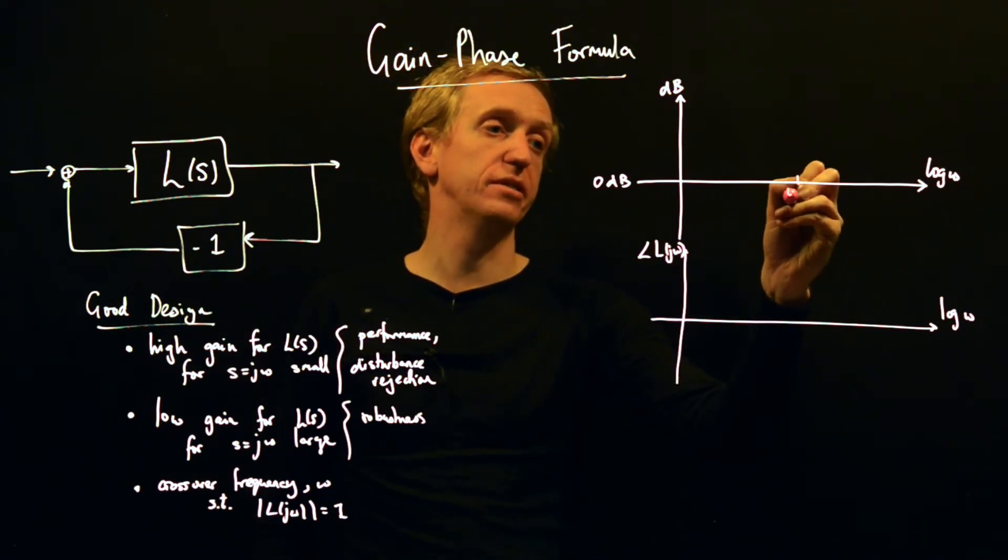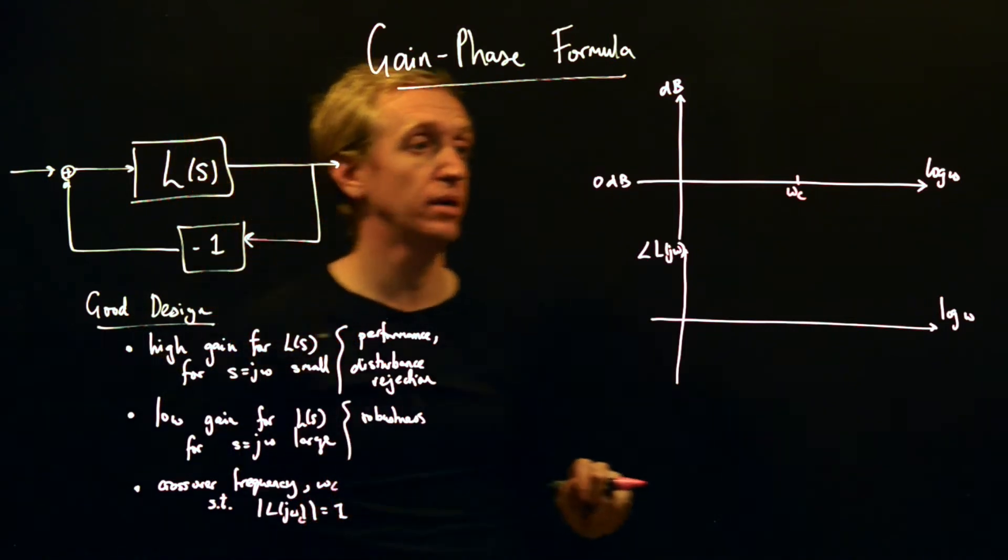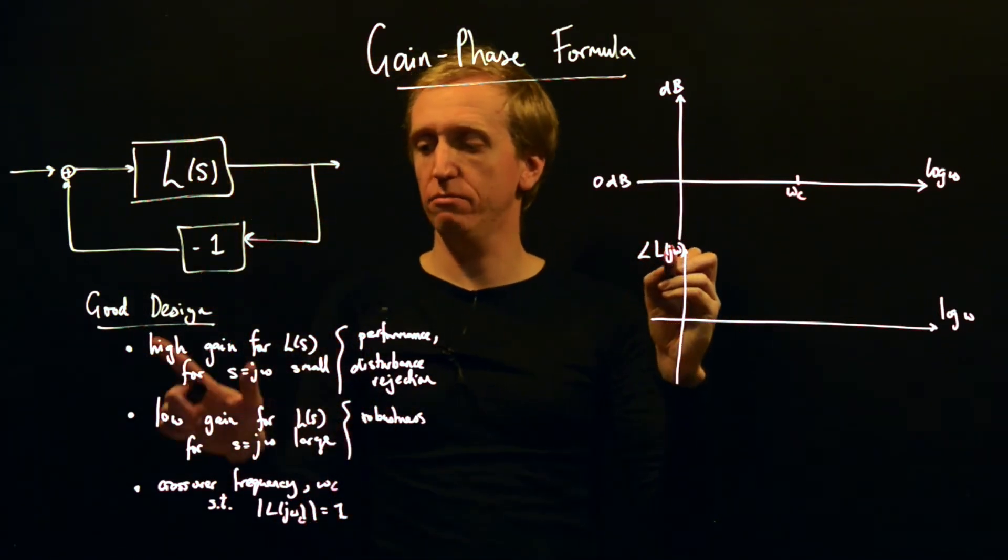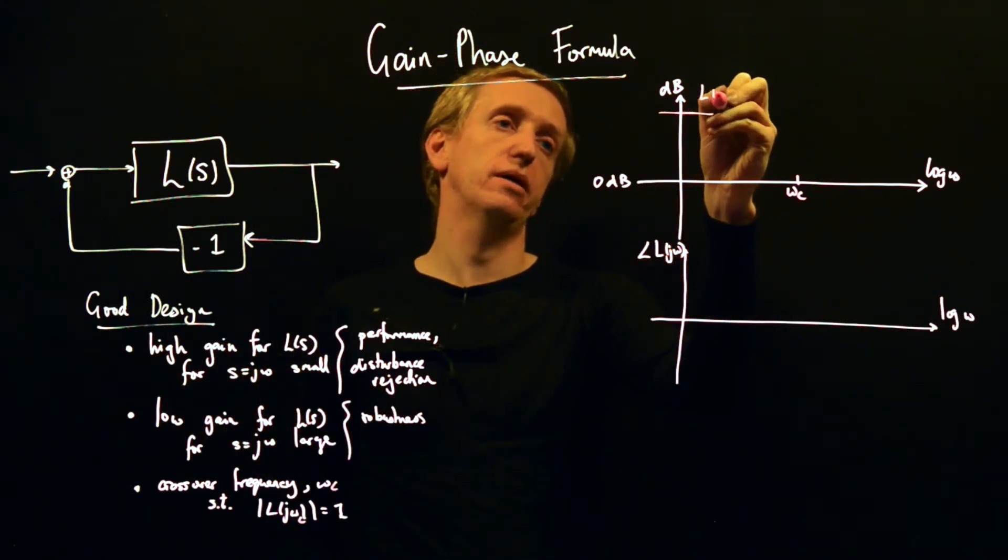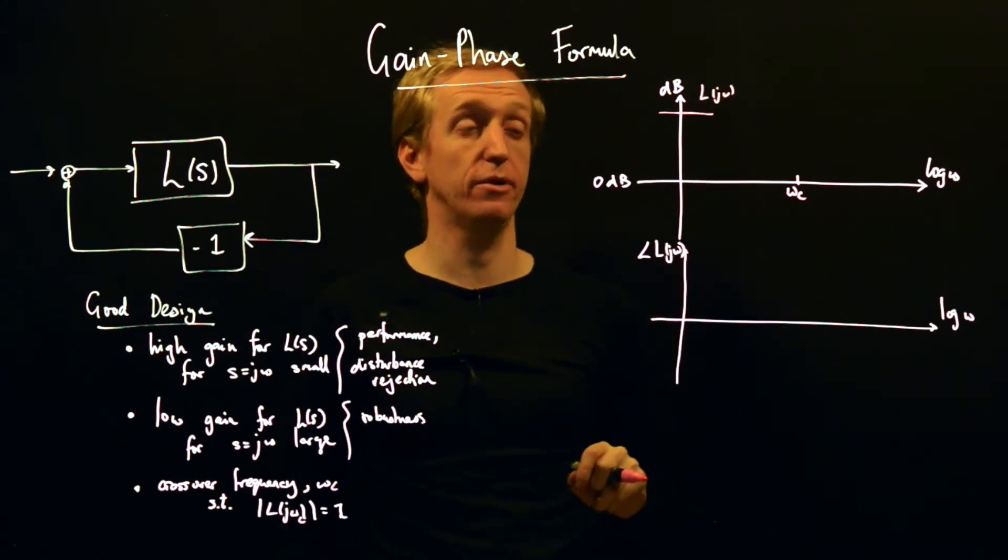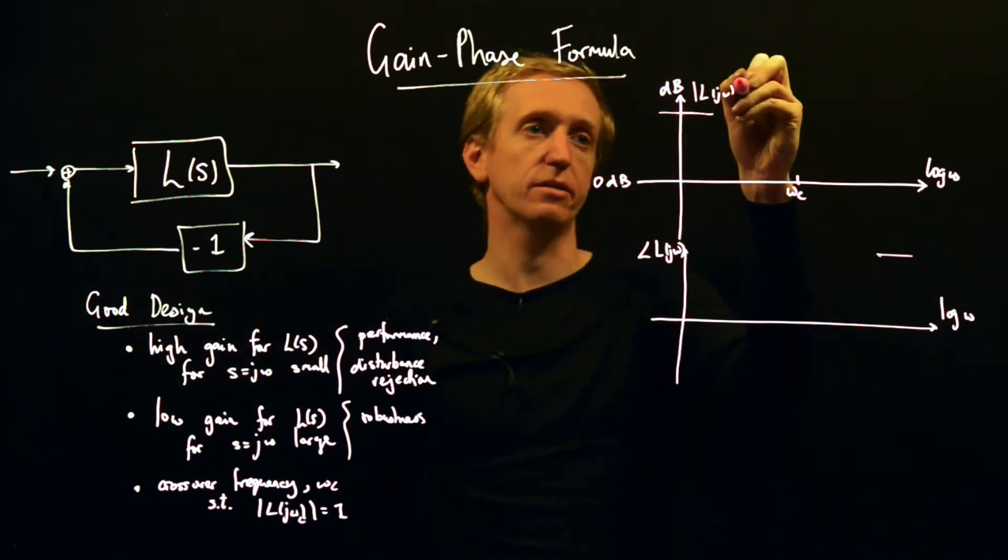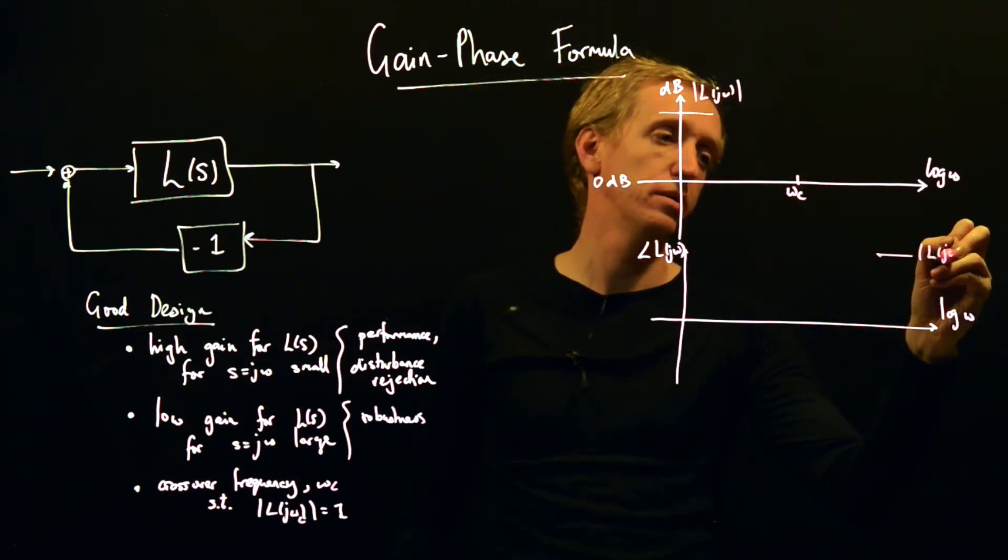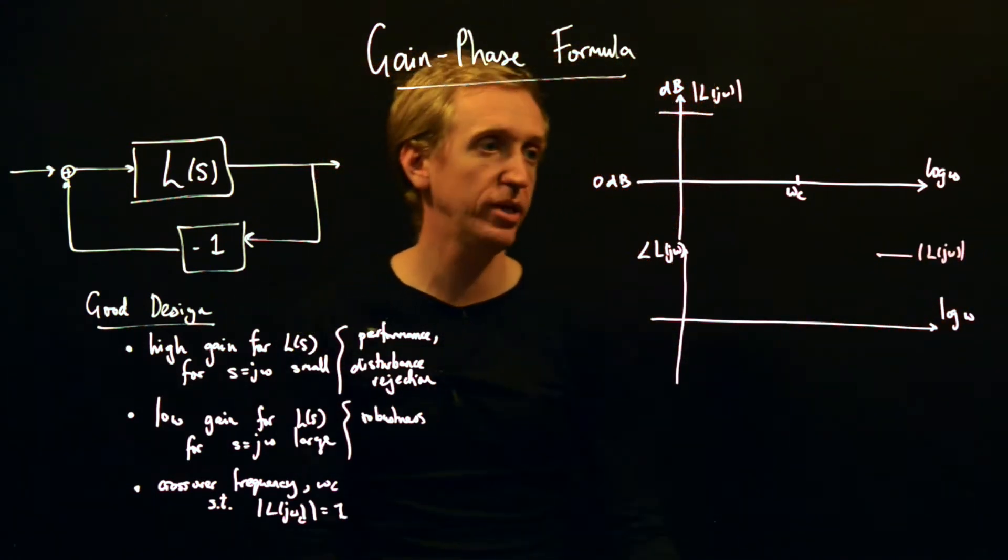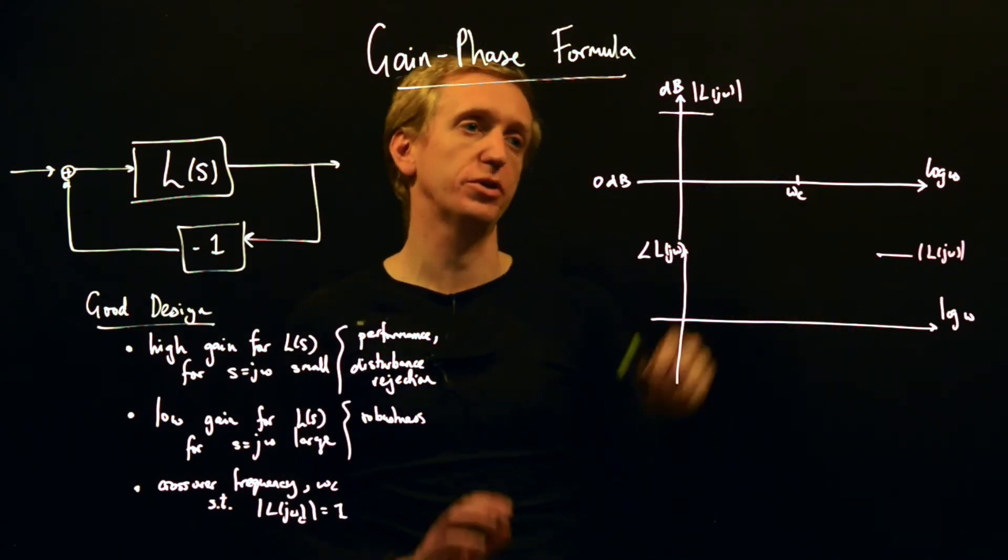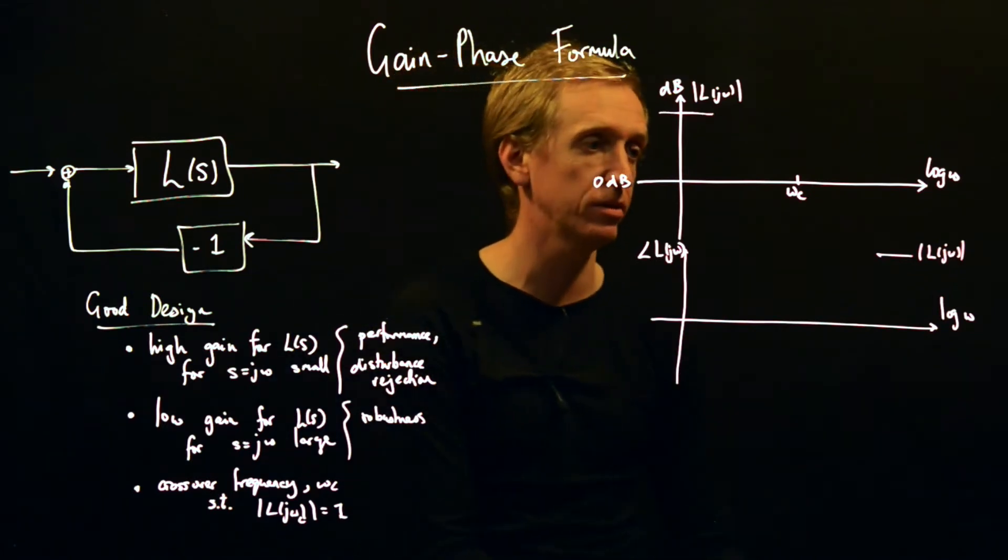If we want to translate these design requirements to the Bode plot: this is ω_c, our crossover frequency. We want high gain for low frequencies, so we want |L(jω)| up here for low frequencies. And we want it way down here for high frequencies. In between we want to cross between them, and wherever we cross, this is our ω_c.